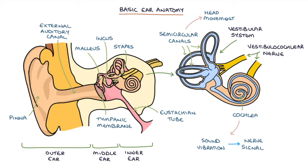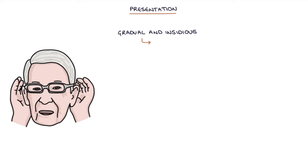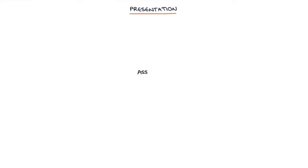Let's talk about the presentation. Hearing loss may be gradual and insidious. Patients may present because other people have noticed they're not paying attention or they're missing details of conversations. Sometimes patients can present with concerns about dementia when in fact the issue is hearing loss. Sudden onset hearing loss, defined as hearing loss over less than 72 hours, requires a thorough assessment to establish the cause. There may be associated symptoms alongside the hearing loss which can give clues about the potential cause.